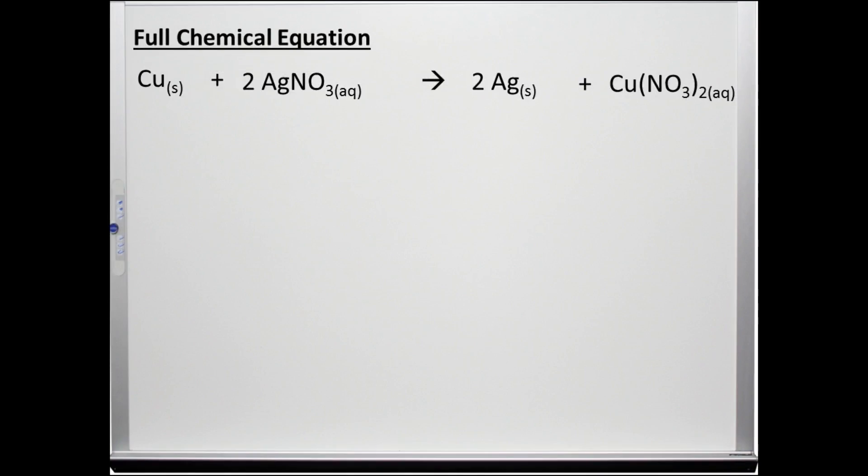The chemical equation shows all substances present in solution. However, it does not show how the electrons are transferred. From the chemical equation, we can form two half-reactions that show which substance loses electrons and which substance gains electrons.